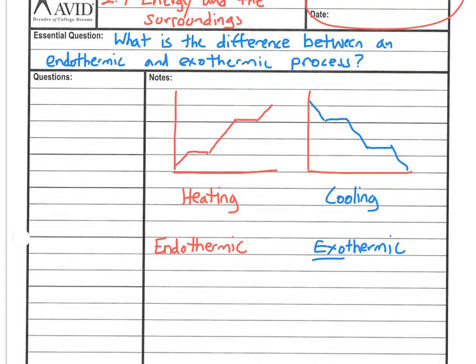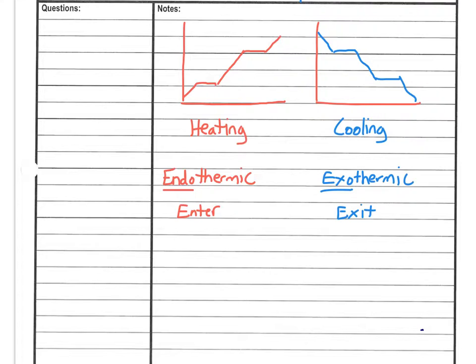The big way to remember what these mean is that exo sounds a lot like exit, and endo sounds a lot like enter. A lot of people say when they read exothermic, they think of an exoskeleton, which is a skeleton that's on the outside, so exothermic is energy on the outside. But that's not the right way to talk about it here, because this is more of a verb sense than a location sense.